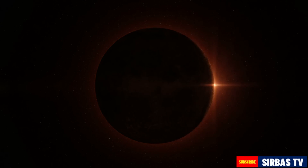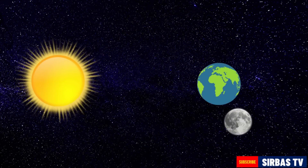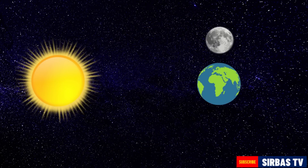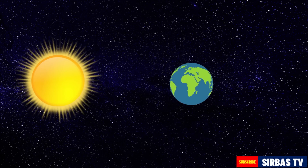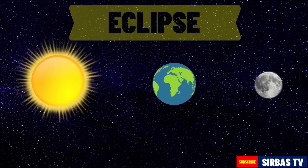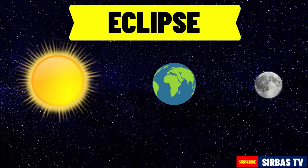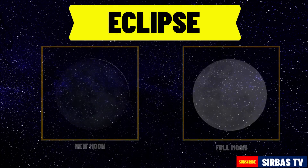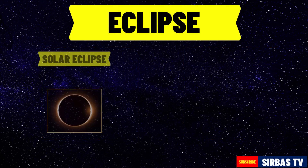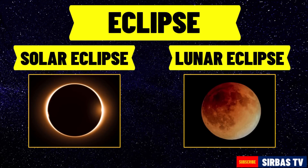Eclipses do not happen frequently because the Earth, the Moon, and the Sun are not always aligned in a straight path or in the same plane. Eclipses only happen when the Moon aligns with the Sun and Earth, specifically during the New Moon or Full Moon. There are only about three solar eclipses and three lunar eclipses in a year. There are two types of eclipses: solar eclipse and lunar eclipse.